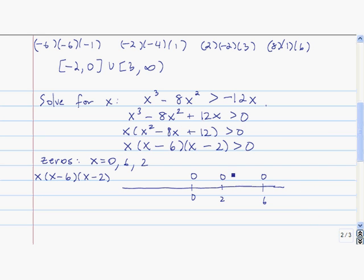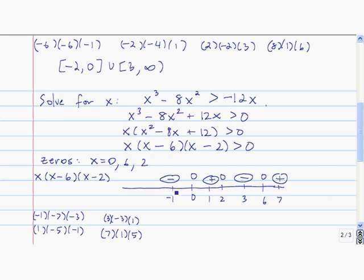So for your zeros you should have gotten 0, 2, and 6. And for your sign chart you should have gotten negative, positive, negative, positive.